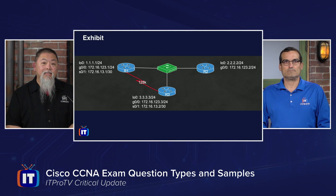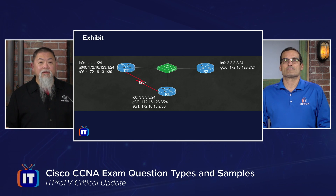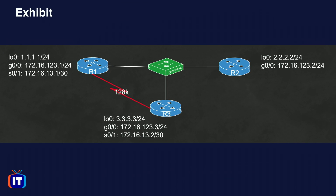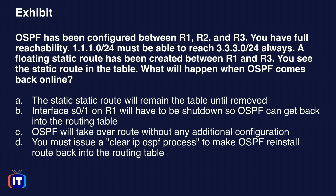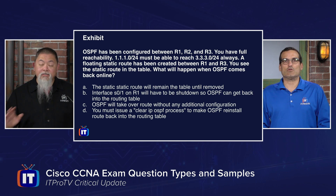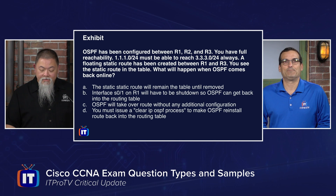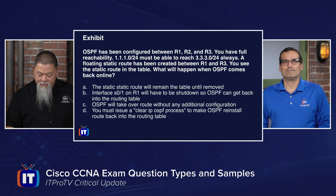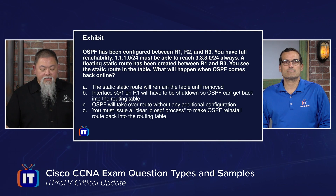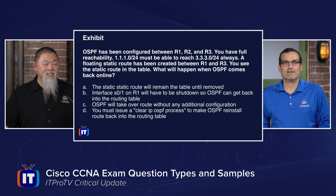Next is a diagram-based question with an exhibit showing routers connected by Ethernet with IP addresses. OSPF has been configured between Router 1, Router 2, and Router 3, with full reachability — 1.1.1.1 must reach 3.3.3.3. A floating static route has been created between R1 and R3, and you can see the static route in the routing table. The question asks: what will happen when OSPF comes back online? Options include: the static route remains until manually removed, interface S0/1 must be shut down for OSPF to take over, OSPF will take over the route without additional configuration, or you must issue a clear IP OSPF process.